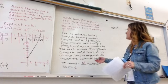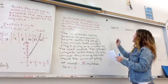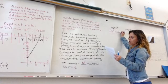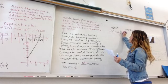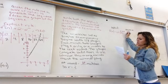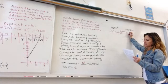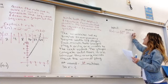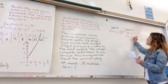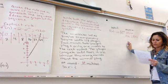So our explicit formula is f sub n equals 64, our starting match, times 1 half to the n minus 1. Now, the recursive is f sub 1 is 64, because we start with 64 matches, and then f sub n equals 1 half, your ratio, times the previous term. So there's your two formulas.